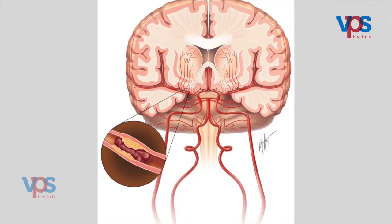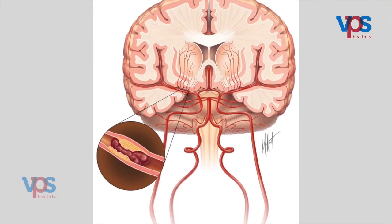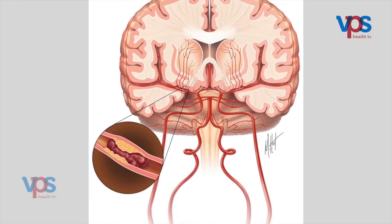Stroke may be of two types: ischemic or hemorrhagic. By ischemic, we mean that the blood inside the blood vessel has clotted and it has blocked the blood supply to a particular region of the brain, resulting in an impairment of body function.